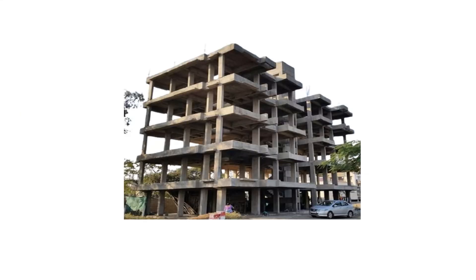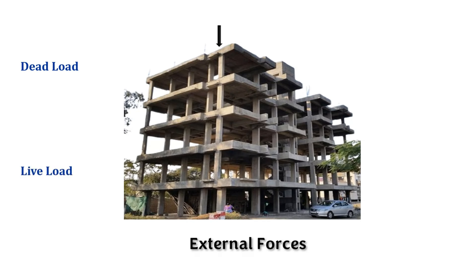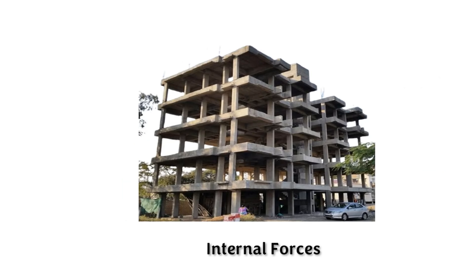Let's start with external loads. The external forces applied are dead load and live load — these two are gravity loads acting on the structure in the vertical direction. And wind load and seismic load — these two loads act in the horizontal direction and are called lateral loads. Now let's look into the internal forces.